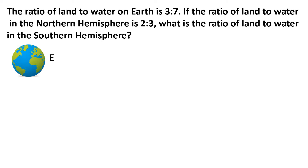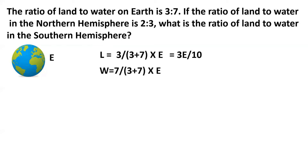So we can write an equation for the total amount of land on earth, which would be 3 by (3 plus 7) multiplied by E, and that gives us 3E by 10. Similarly, we can write an equation for the total amount of water on earth, which is W equal to 7 by (3 plus 7) multiplied by E, and that comes to 7E by 10.